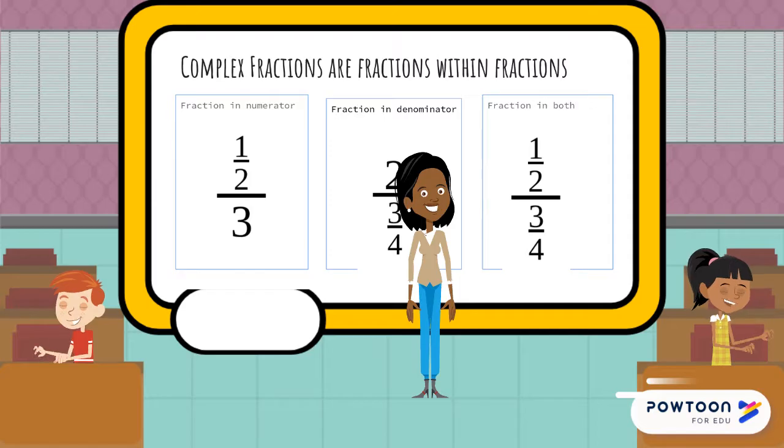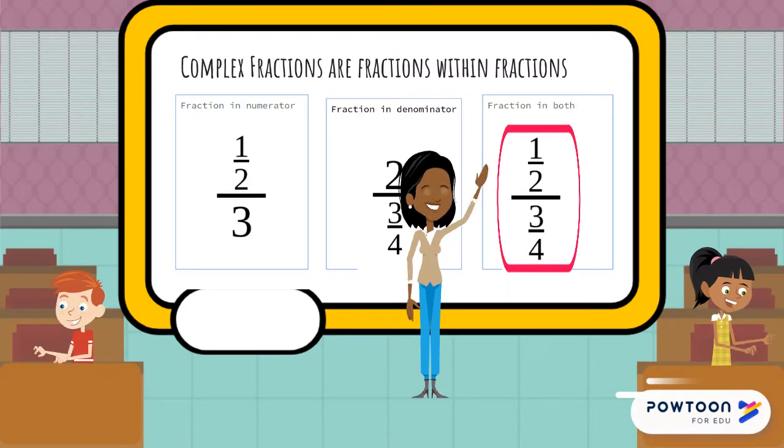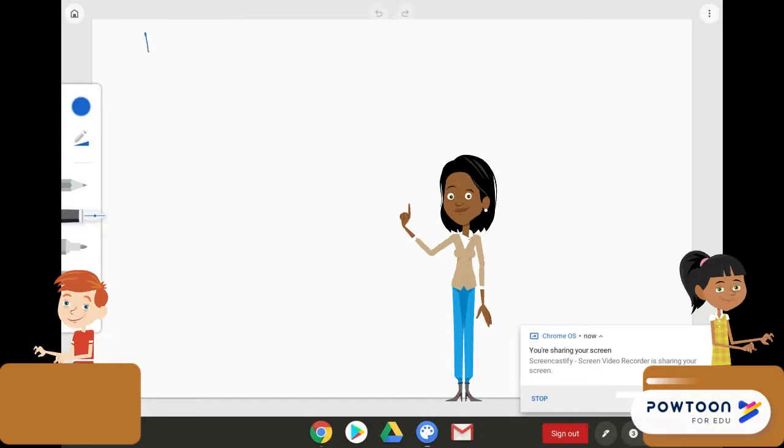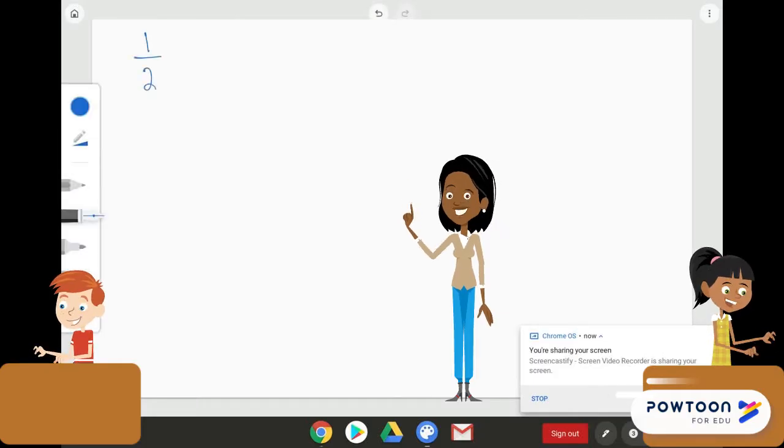Let's talk about how we would simplify the complex fraction, 1 half divided by 3 fourths. So, the first thing we're going to do is rewrite that in an alternate form as 1 half divided by 3 fourths.